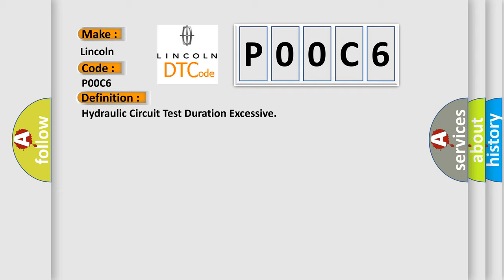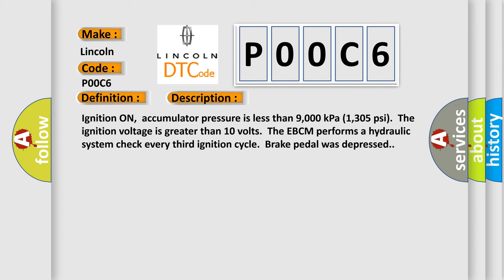And now this is a short description of this DTC code. Ignition on, accumulator pressure is less than 9000 kilopascals (1305 psi). The ignition voltage is greater than 10 volts. The EBCM performs a hydraulic system check every third ignition cycle when the brake pedal was depressed.